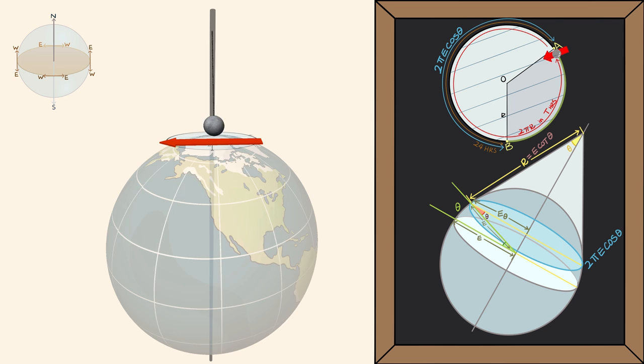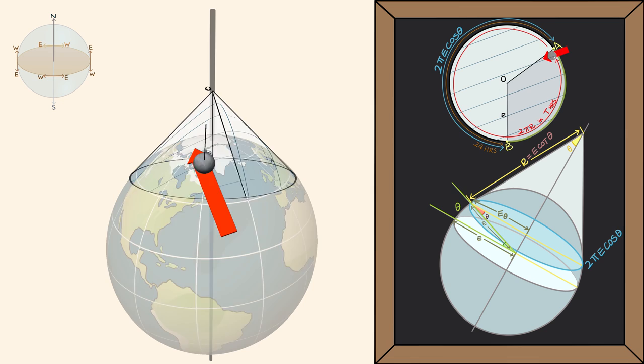And if we go the other direction, we notice the cone getting taller and taller until it just becomes a cylinder. And the pendulum doesn't rotate at all.